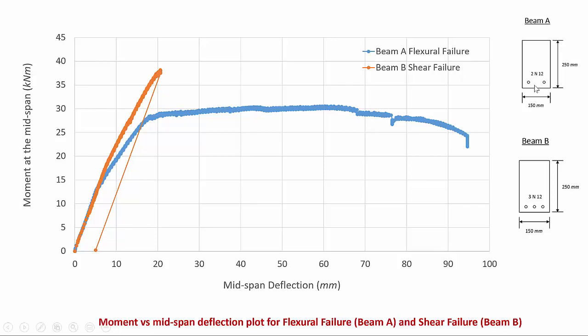In beam A there are only two reinforcing bars, so the flexural capacity is lower than the shear capacity, causing it to fail in flexure when it reached its maximum flexural capacity. In beam B there are three reinforcing bars, increasing the flexural capacity above the shear capacity, so the beam failed in shear. This explains the clear distinction between the two failure modes.